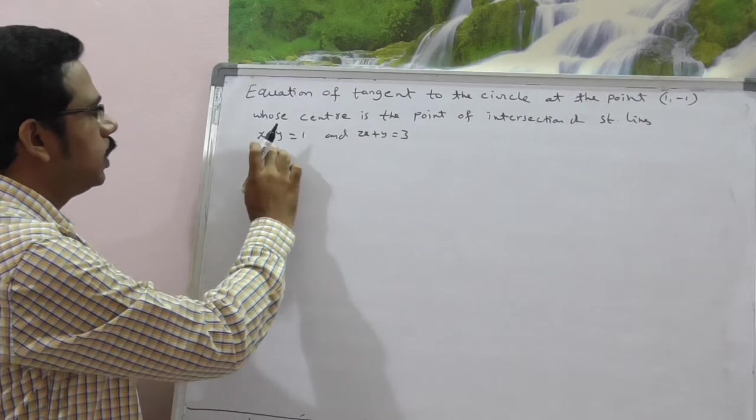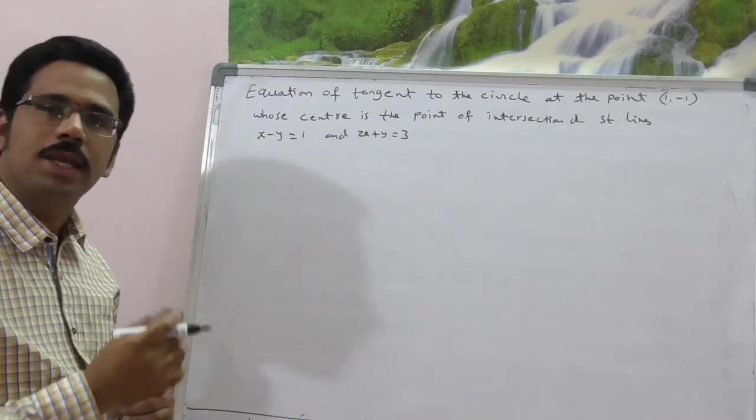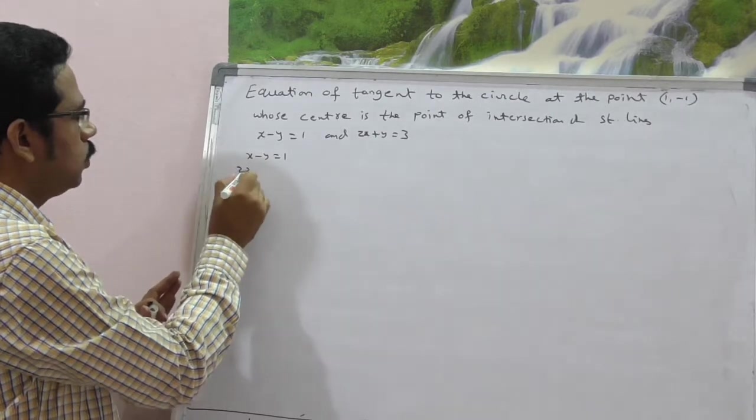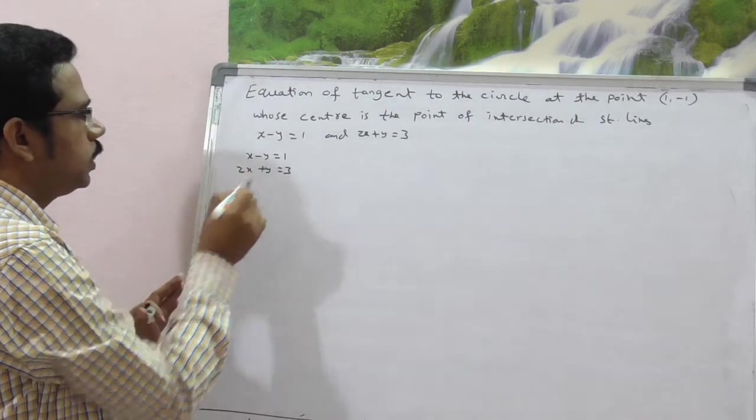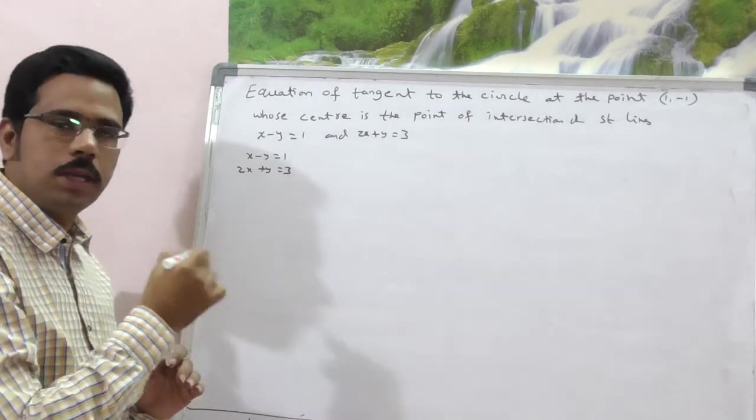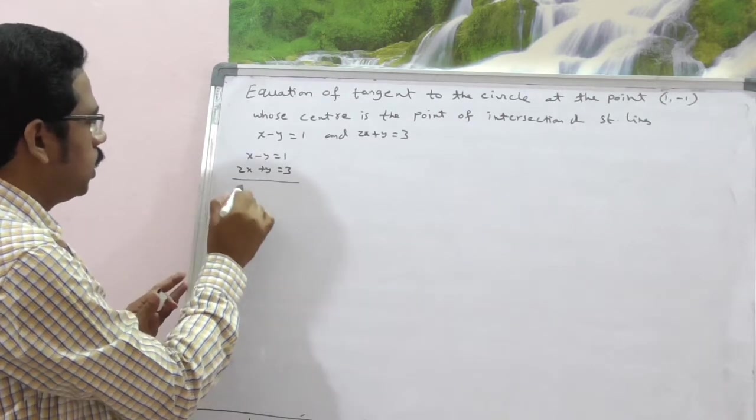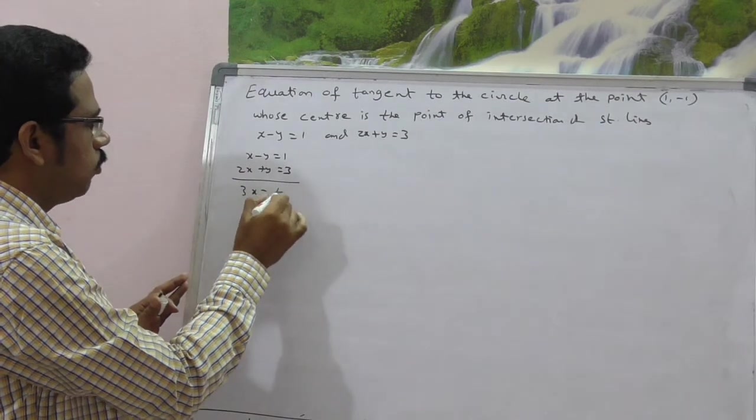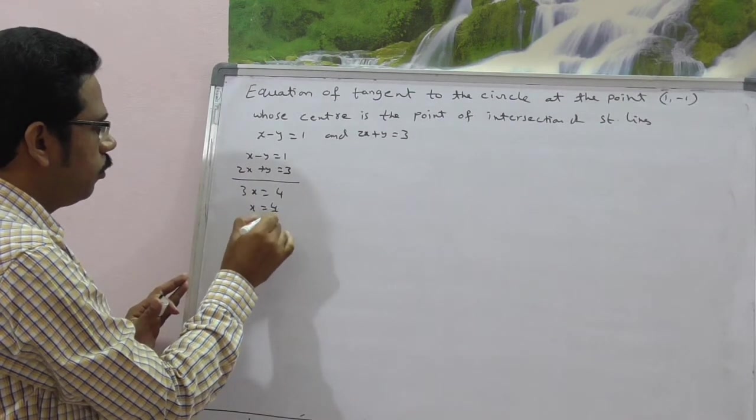First, we have to calculate what is the point of intersection of given straight lines. Here, x minus y is equal to 1, 2x plus y is equal to 3, these two are given straight lines. Find point of intersection. Here it is, 3x is equal to, y gets cancelled, 3x is equal to 4, x is equal to 4 by 3.